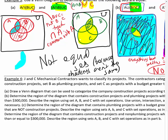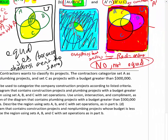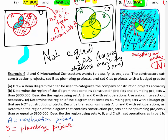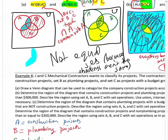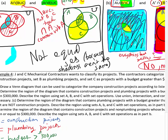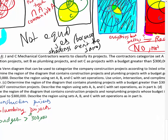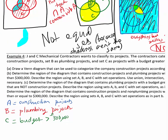Example four: J&C Mechanical Contractors wants to classify its projects. Set A is construction projects. Set B is plumbing projects. Set C is projects with a budget greater than $300,000. Part A: draw a Venn diagram that can be used to categorize the company's construction projects according to the listed criteria. Draw the universal set — all projects in general — with circles for A, B, and C, all intersecting.